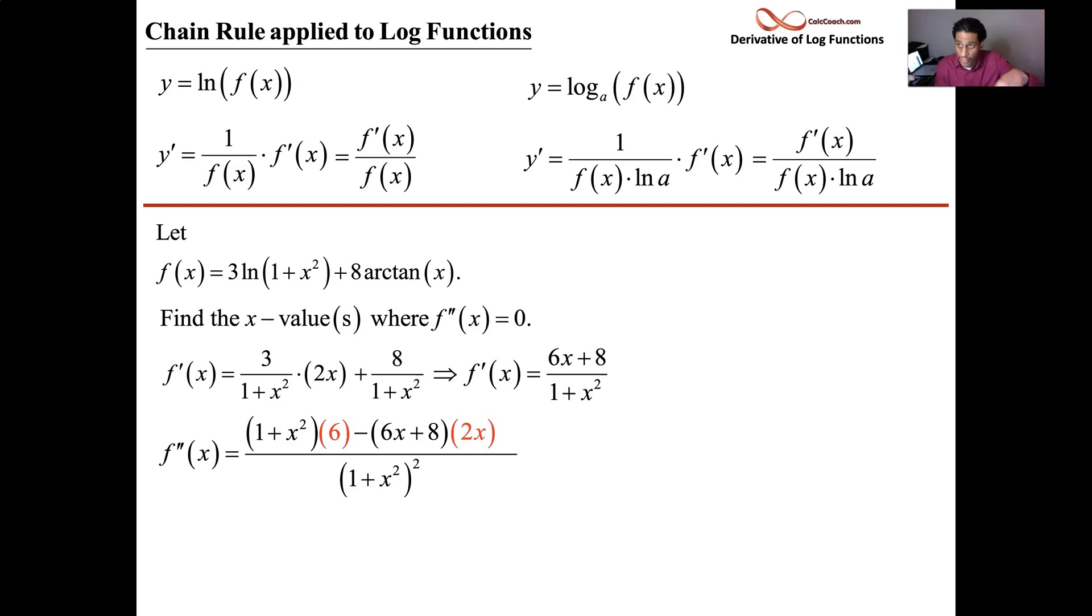So we use a quotient rule. We take the denominator and square it. We bring the denominator up to the numerator, multiply it by the derivative of the numerator. 6x plus 8 derivative, that's 6. Leave the numerator alone, take the derivative of the denominator, which is 2x. And remember there's a minus in between these.